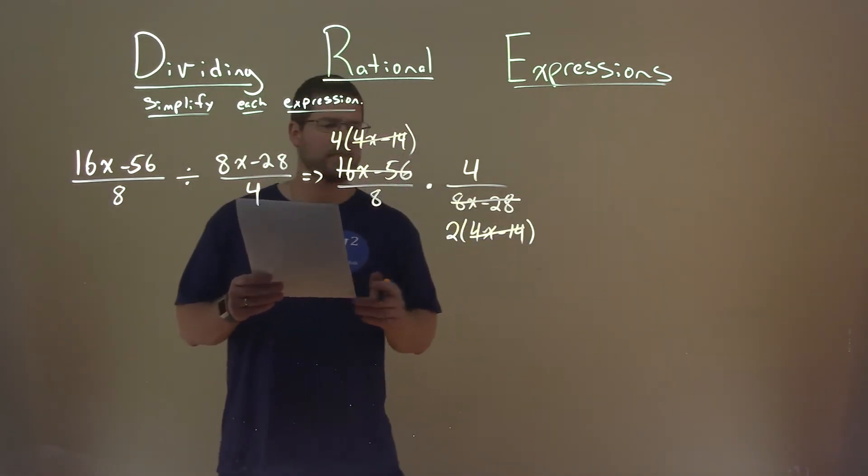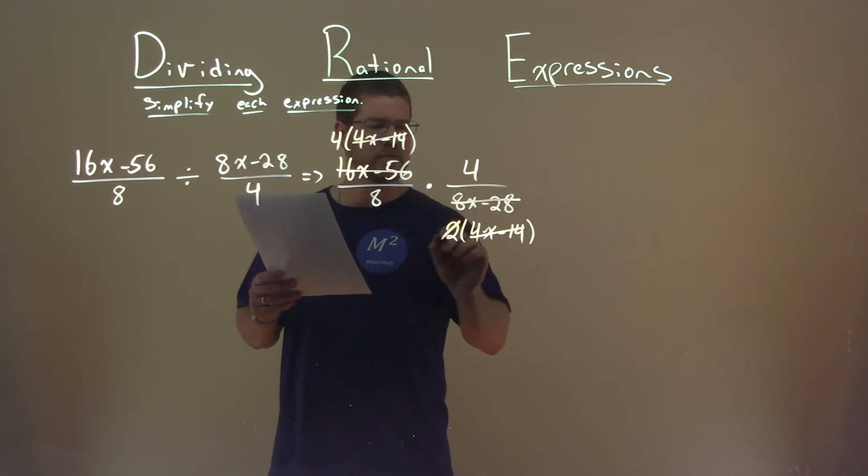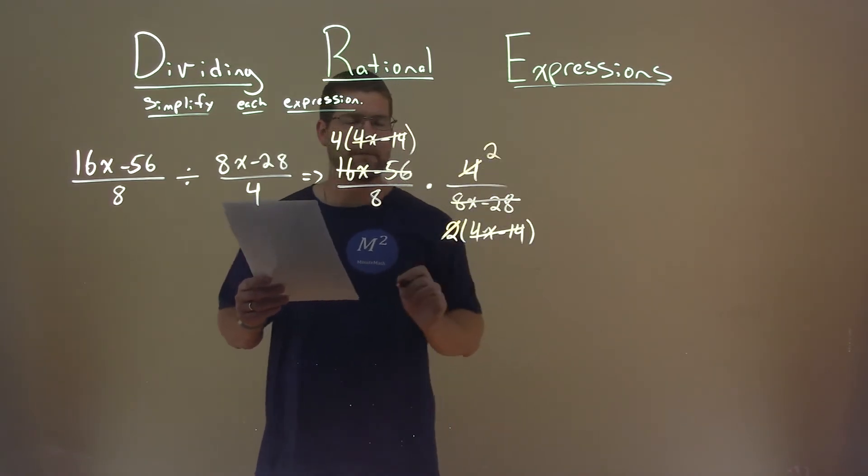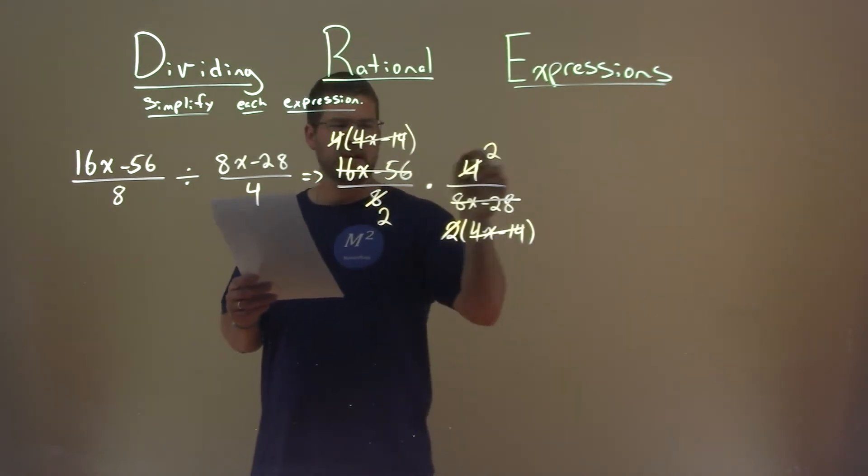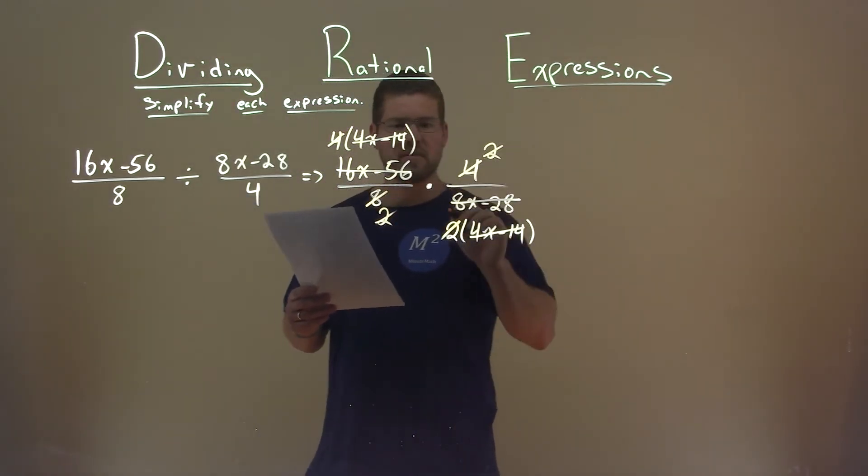What about this? 4 and 2. 2 goes into 4, 2 times. We're left with that. And 4 and 8. 4 goes into 8, 2 times. Then these 2s cancel each other out.